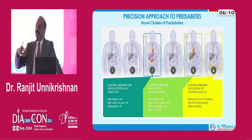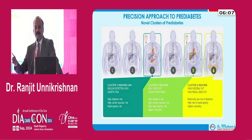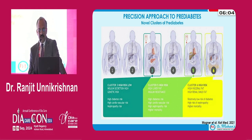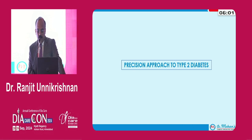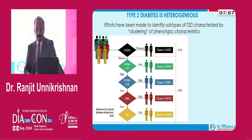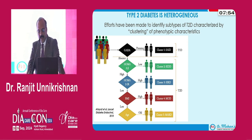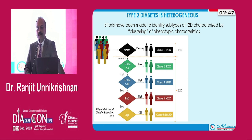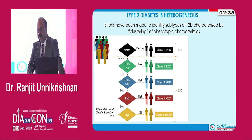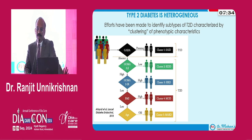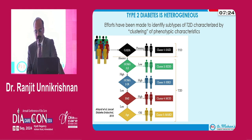This is the well-known study from Leif Groop's team by Ahlqvist et al., published in Lancet Diabetes & Endocrinology in 2018, in which they reclassified individuals with clinically diagnosed type 2 diabetes into five clusters based on clustering of various phenotypic patterns. There is a group that is autoantibody-positive — probably undiagnosed or misdiagnosed type 1 diabetes — called SAID (Severe Autoimmune Diabetes). There is a group with poor insulin secretion called SIDD (Severe Insulin-Deficient Diabetes), and a group with severe insulin resistance called SIRD.